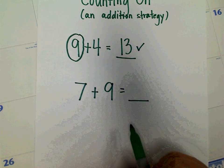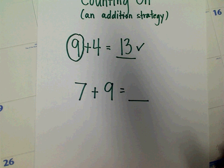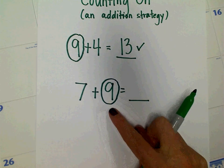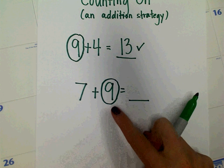Now remember, so that we can be efficient and we can do this quickly, we always start with the biggest number and we put that biggest number in our heads. The biggest number in this equation is 9. So I'm going to start with 9 and I'm going to count on 7.